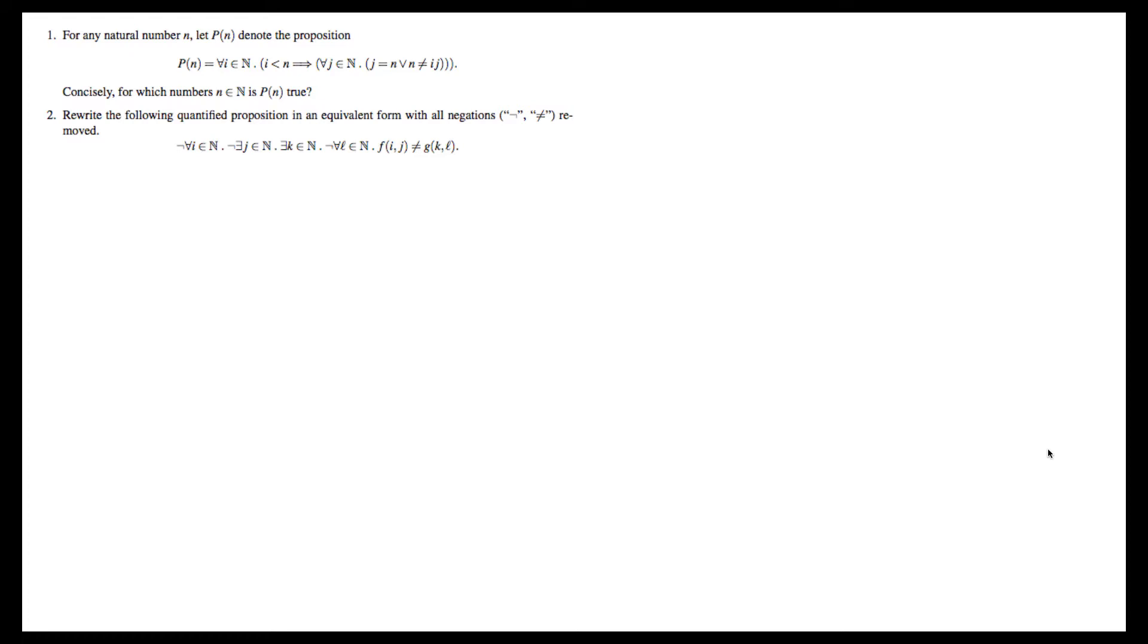Now I'm going to start out by answering actually a slightly different question, which is: for which natural numbers is P of n false? This turns out to be a little bit easier to think about, and then we can just say that for all other natural numbers, P of n is true.